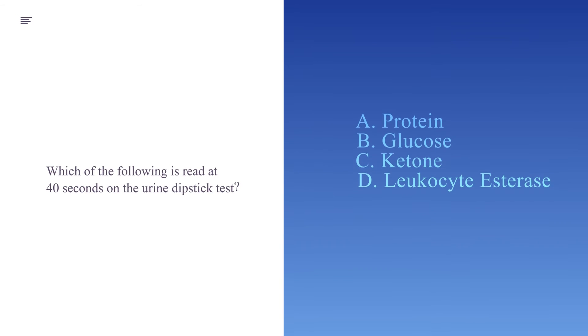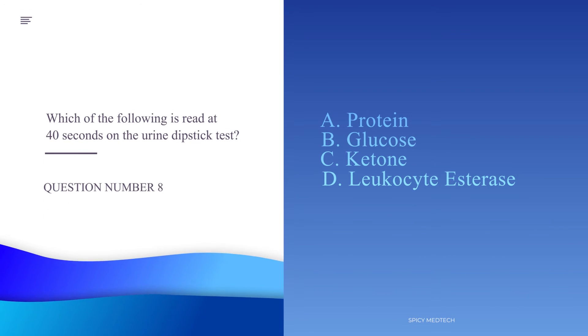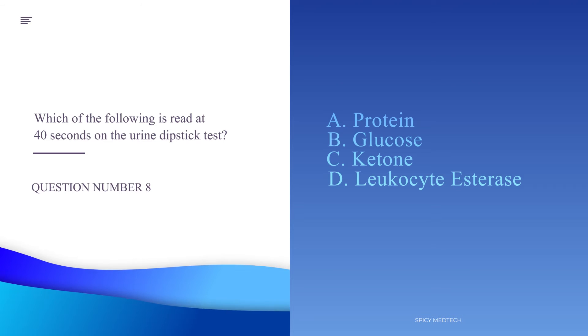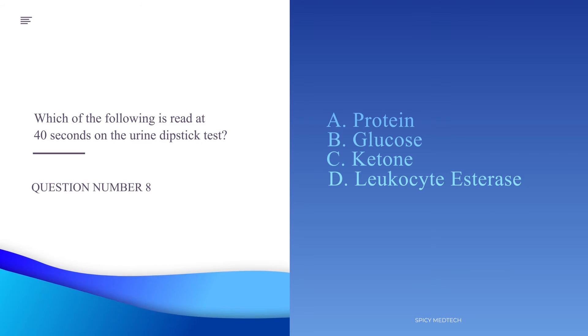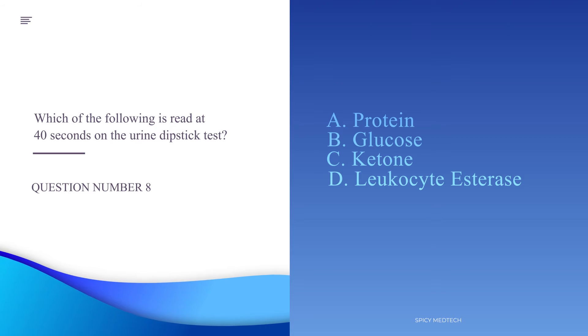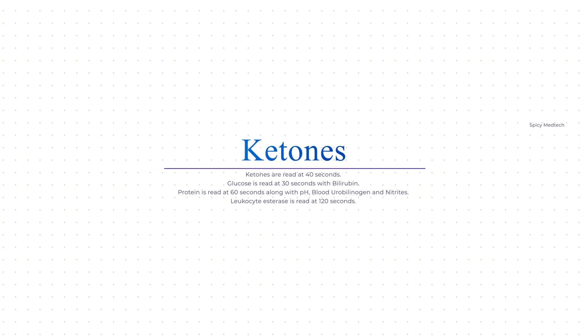Number eight: Which of the following is read at 40 seconds on the urine dipstick test? A. Protein, B. Glucose, C. Ketone, or D. Leukocyte esterase. The answer is letter C, ketones. On the dipstick urine test, protein is read after 60 seconds along with pH, blood, urobilinogen, and nitrite. Glucose is read at 30 seconds along with bilirubin. Leukocyte esterase is read after the longest time at 120 seconds.